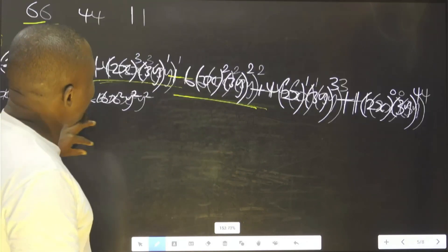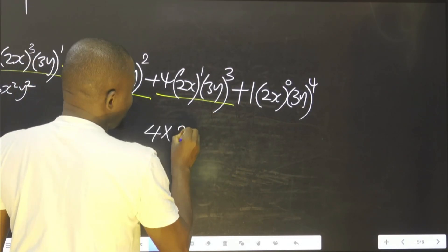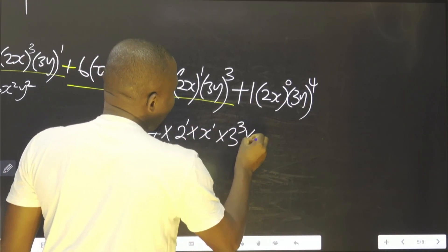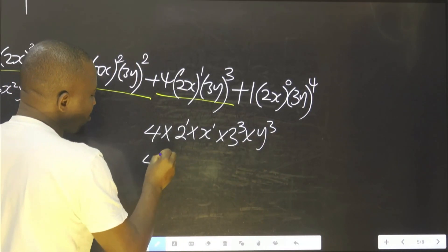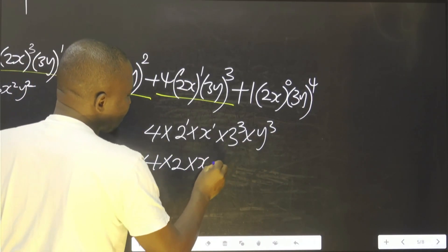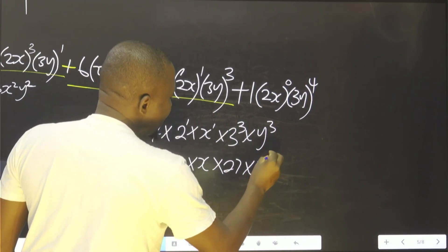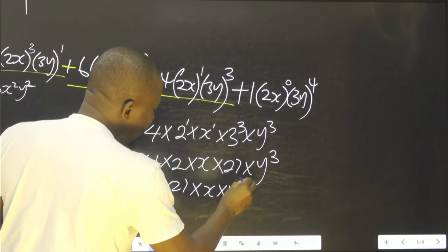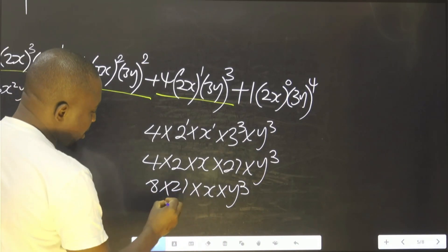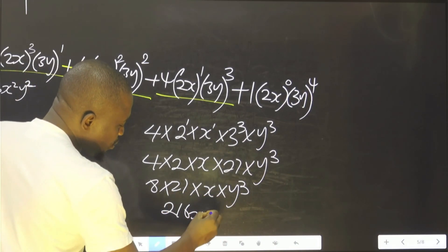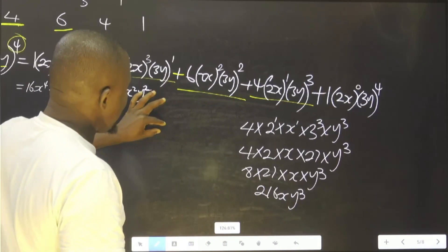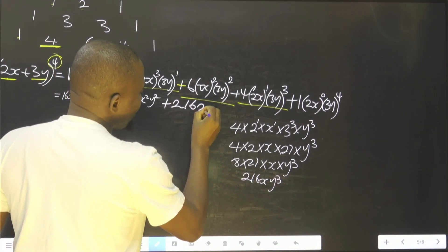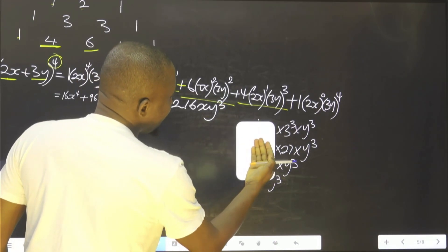Once we are through with that, we go for this next one, which says 4 times 2 raised to the power 1, multiplied by x raised to the power 1, multiplied by 3 raised to the power 3, multiplied by y raised to the power 3. That is 4 times 2 times x times 27 times y³. It means 8 multiplied by 27 multiplied by x multiplied by y³. We get 216xy³. So we put plus 216xy³.